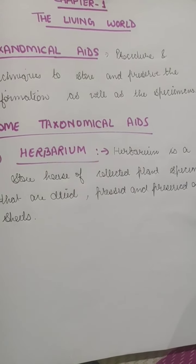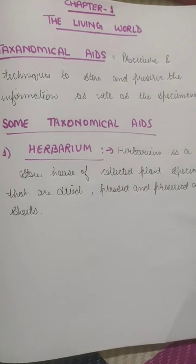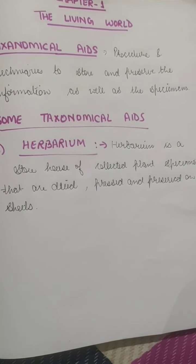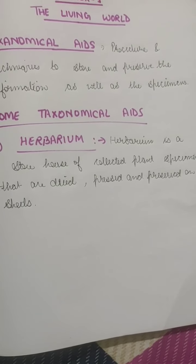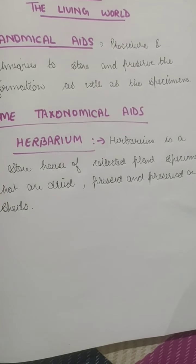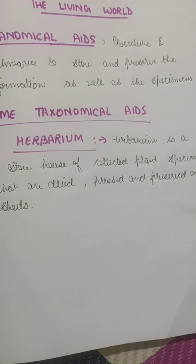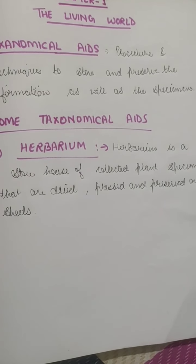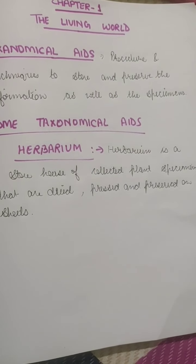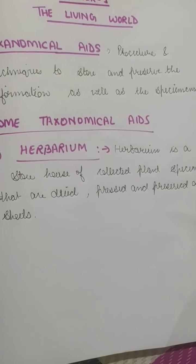The herbarium sheets also carry a label. We don't just paste a sample of a plant — we also have to mention the date when it was found, the place of collection, and who found it. We have to write its local name, its botanical name, and all the taxonomic classification details such as the family it belongs to and who collected the plant.